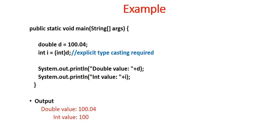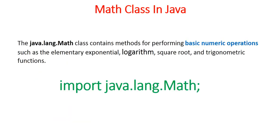In a broader example, we declare double d = 100.04, then convert it to integer i = (int) d. When we print d, the output is exactly 100.04 as initialized. When we print i, the fractional part is dropped, so the output is 100. This is how type conversion works — we can convert double to integer or integer to float as needed.